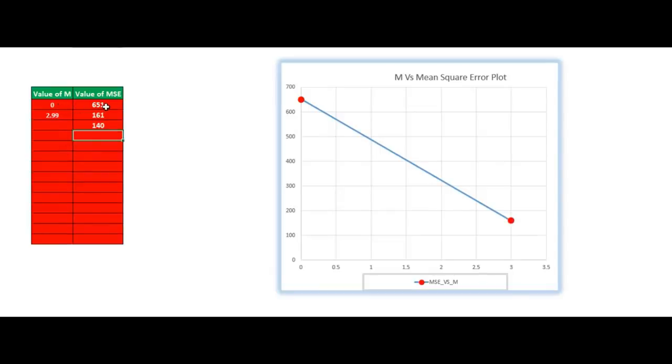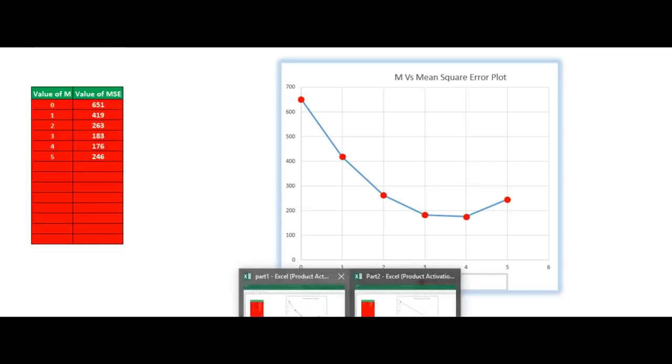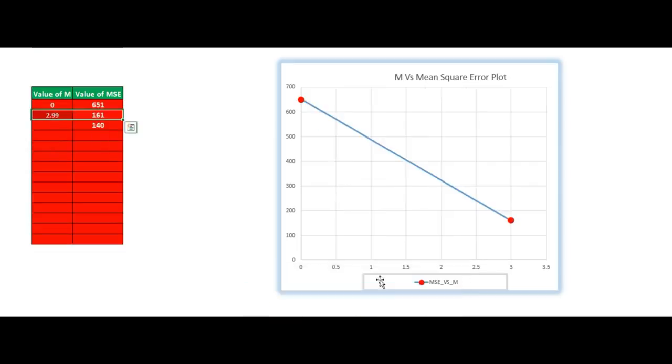So as a starting, we had 651 as a mean square error when we had value m equals 0 and c equals 0. Now, after updating our values, our mean square error got reduced to 161. It's a huge decrease in the mean square error. You might have remembered in the previous example when we were trying to put random numbers, we were not being able to achieve this 161 value even after 5 iterations. But by applying the gradient descent, we were able to get a very low mean square error in the first step itself.